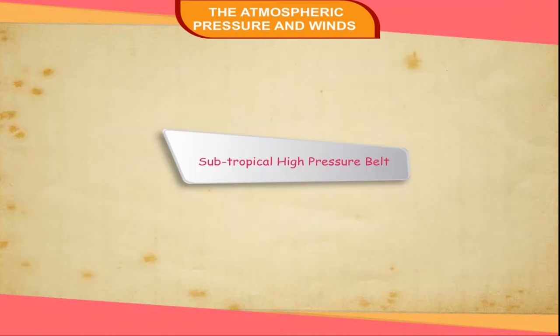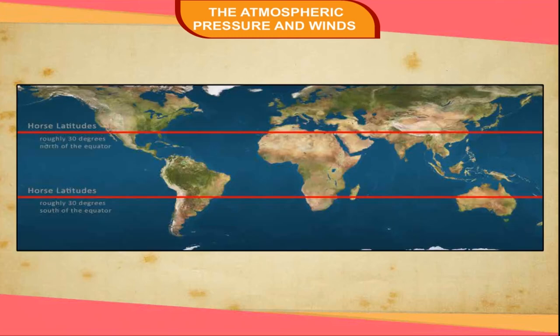Subtropical High Pressure Belt: This belt extends between 30 and 35 degrees latitude in both hemispheres. Here, the winds are comparatively dry and calm. This is a zone of descending winds. The descending air starts to pile up and collects near the tropics, creating a high pressure belt. This belt is also called the horse latitude.